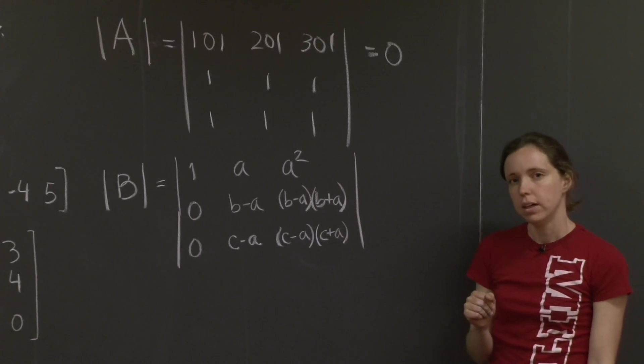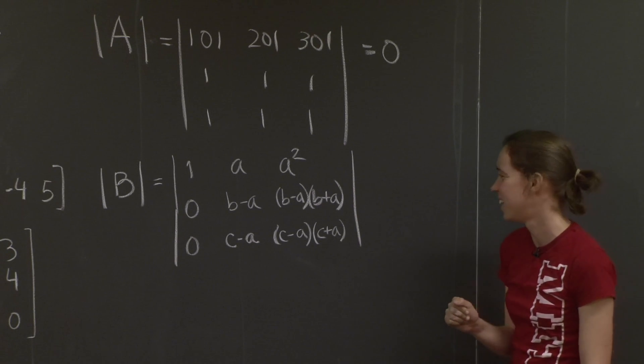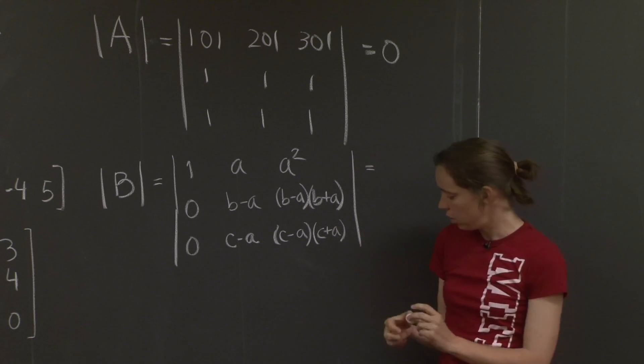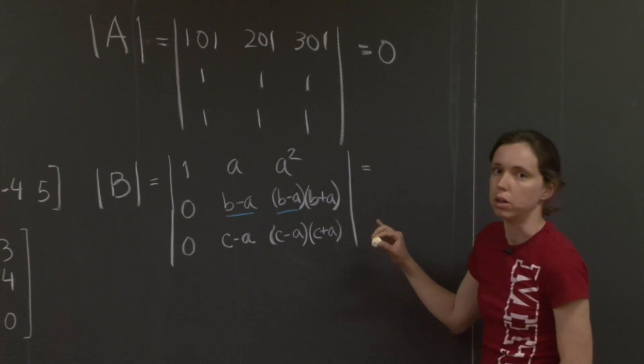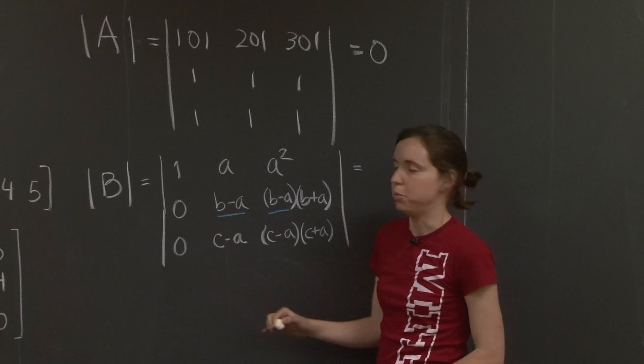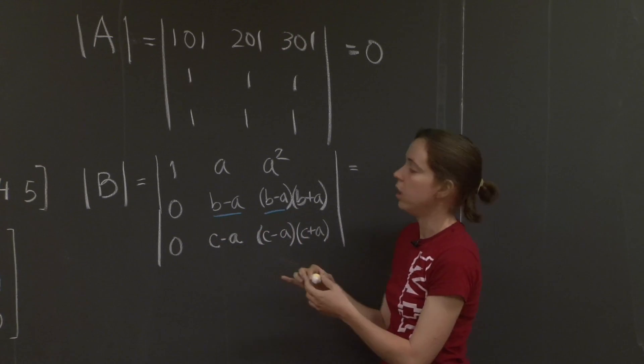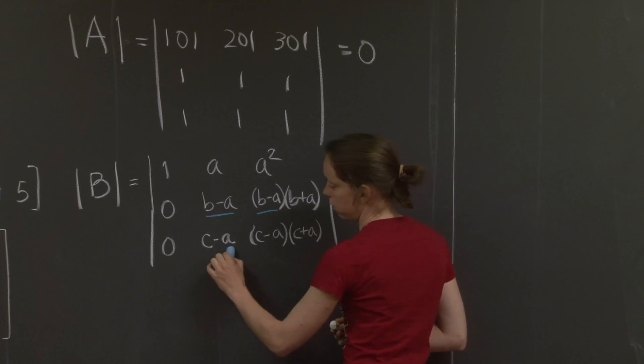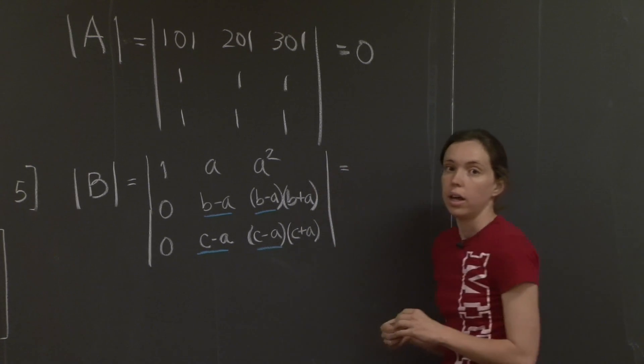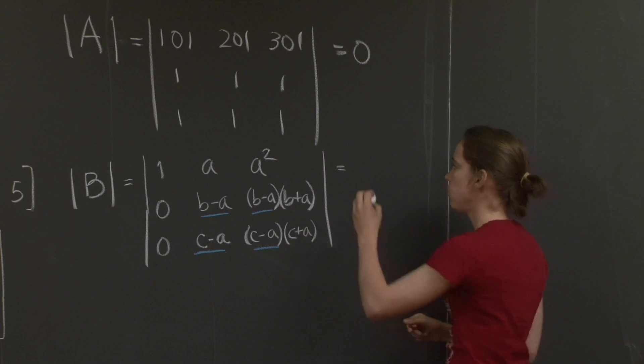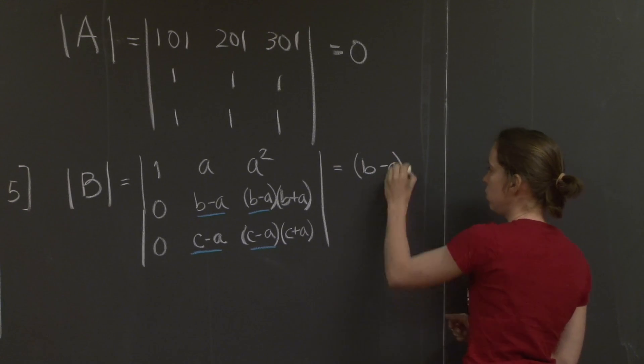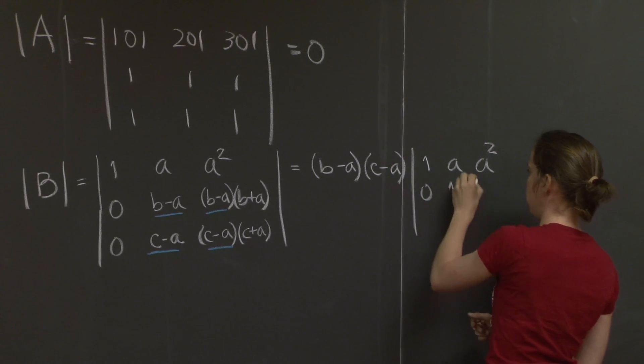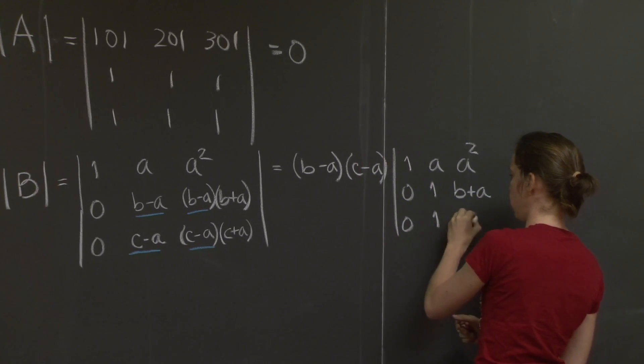All right. Let's use that third property, that the determinant is linear on each row separately. So what I'm going to do is see this factor of B minus A shows up in every entry of this row. Well, it's a 0, so it's the 0 multiple of B minus A. So I'm going to pull out this factor of B minus A, and this row is going to become 0, 1, B plus A. I will also, in the same step, do the same thing with the third row. I'll pull out a factor of C minus A, and it will become 0, 1, C plus A.